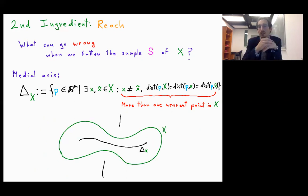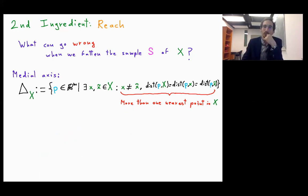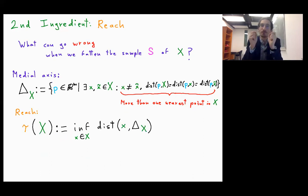A medial axis for a particular set X might look like this. And the quantity that we will be studying is called the reach. So this is the infimum distance of the points in X to the medial axis.